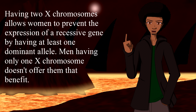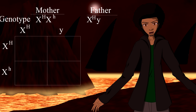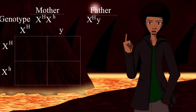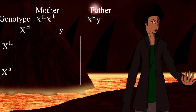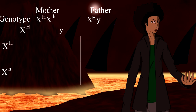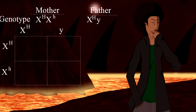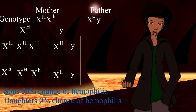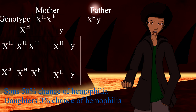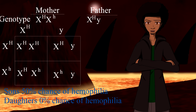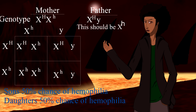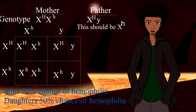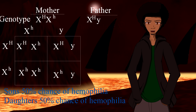In this example, the mother is a carrier of hemophilia. Her genotype is X Big H, X little h. Hemophilia is when your blood doesn't clot normally because it lacks sufficient blood clotting proteins. The father has normal blood clotting — his genotype is X Big H, Y. Filling out the Punnett square: the sons have a 50% chance of expressing hemophilia and the daughters have a 0% chance of expressing hemophilia. The only time both daughters and sons have a 50% chance of expressing these traits is when the mother is a carrier and the father already expresses the trait.